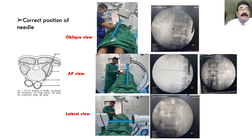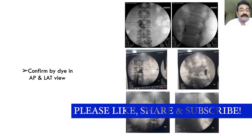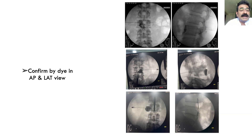The needle is advanced anteriorly and medially so the tip lies exactly anterolateral to the vertebra, confirmed in AP, lateral, and oblique views. In AP view, the needle should be at the eye of the scotty dog — at the pedicle. In lateral view, the depth is assessed and the needle should not cross the anterior border of the vertebra. Once confirmed, dye is injected to observe its spread superiorly and inferiorly, ensuring it does not enter any nearby vital structures — particularly, the needle tip must not be in a vessel, as that can cause dreadful complications including death.